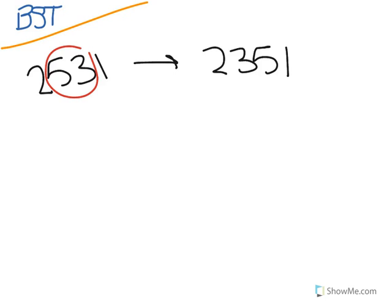So a transposition error in a string of numbers occurs if two digits are switched. So in this sequence, 2, 5, 3, 1, if the 5 and the 3 were switched, it became 2, 3, 5, 1.